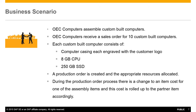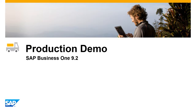OEC Computers assemble and sell custom built computers. In our business scenario, OEC Computers receives a sales order for 10 custom built computers. Each custom built computer consists of a computer casing engraved with the customer logo, an 8GB CPU, and a 250GB solid state drive. A production order is created and the appropriate resource is allocated. During the production order process, there is a change to an item cost for one of the assembly items and this cost is rolled up to the parent item accordingly.